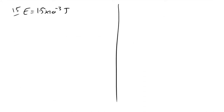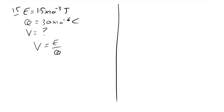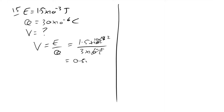Question 15: work done = 1.5×10⁻³ J, charge = 30 μC. PD is work done per unit charge (joules per coulomb). V = 1.5×10⁻³ / (30×10⁻⁶) = 50 volts. The answer is 50 V.